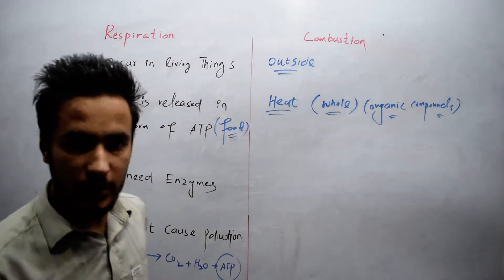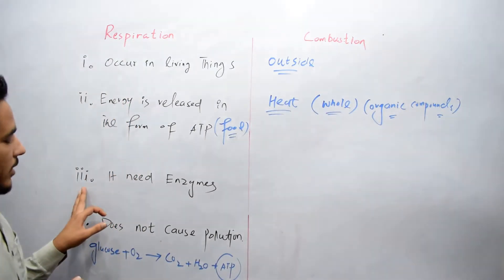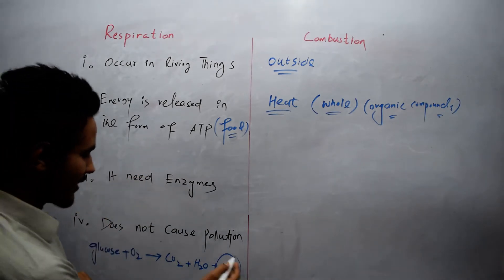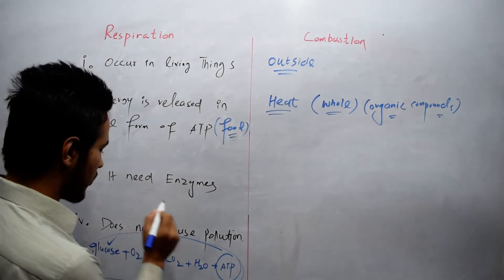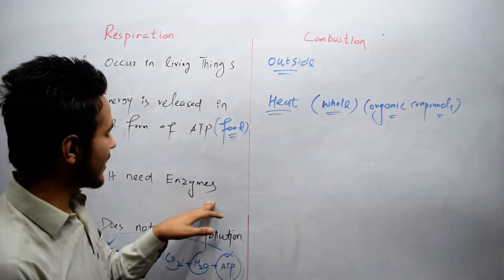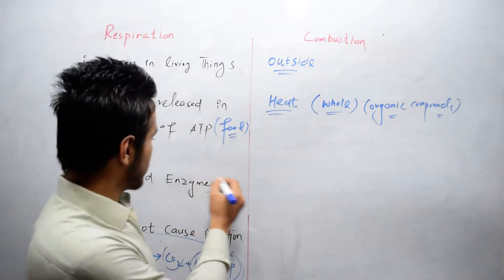Respiration needs enzymes for this reaction. There are certain enzymes which break glucose into carbon dioxide, H2O, and ATP. While in combustion, it does not need enzymes.